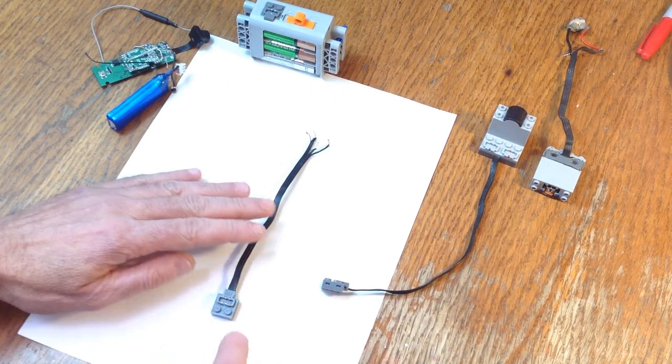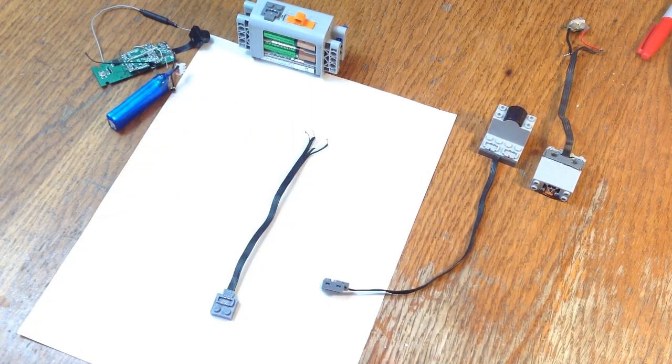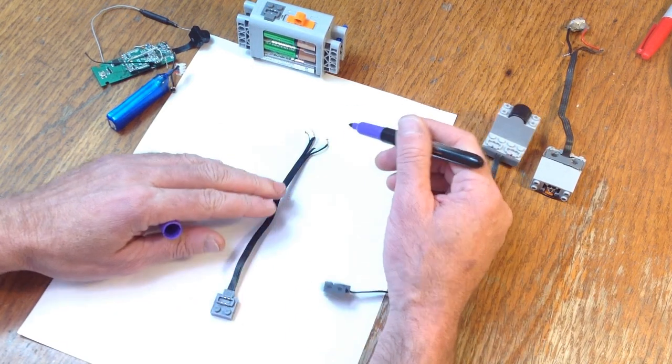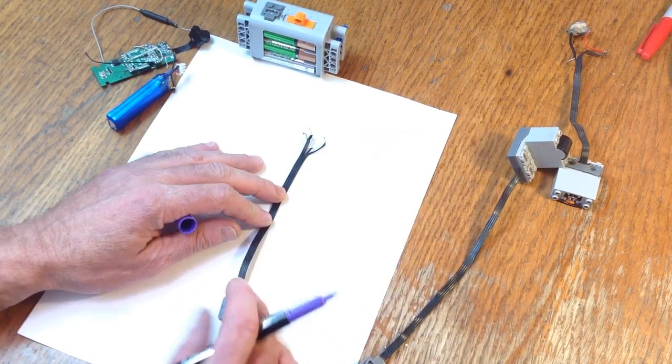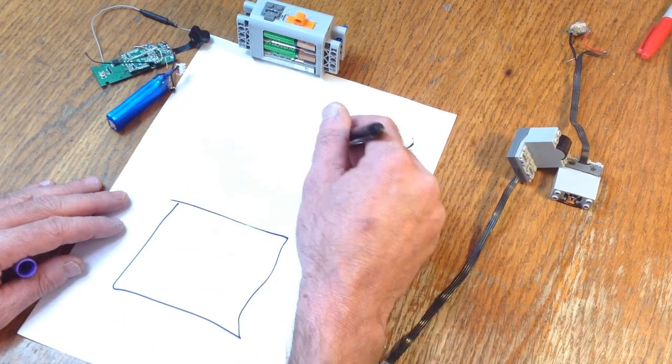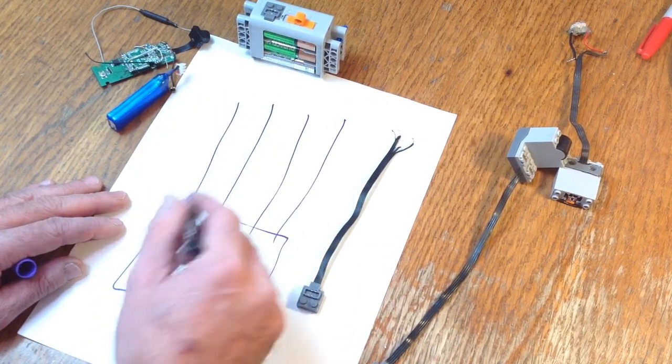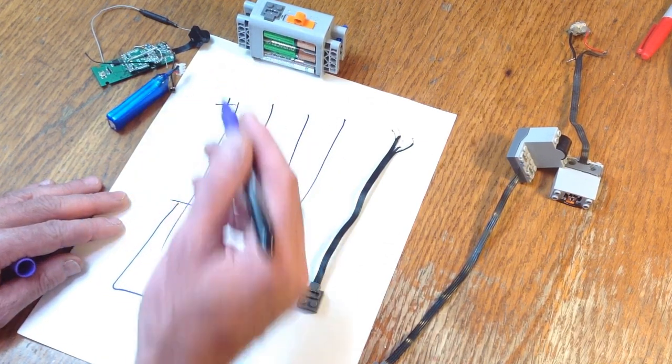Alright, so here I've got a power connector that I removed off of an old broken motor. You'll notice that there's four wires coming in here. So if I diagram this right here, we've got four wires coming in. This one here is going to be your positive wire and this one here is going to be your negative wire.